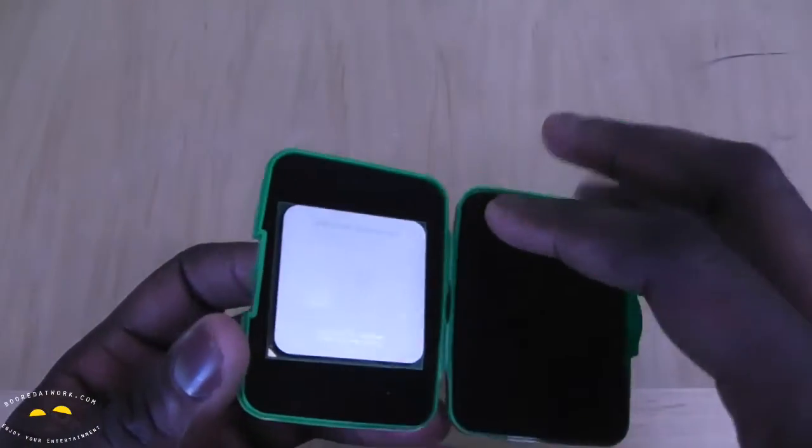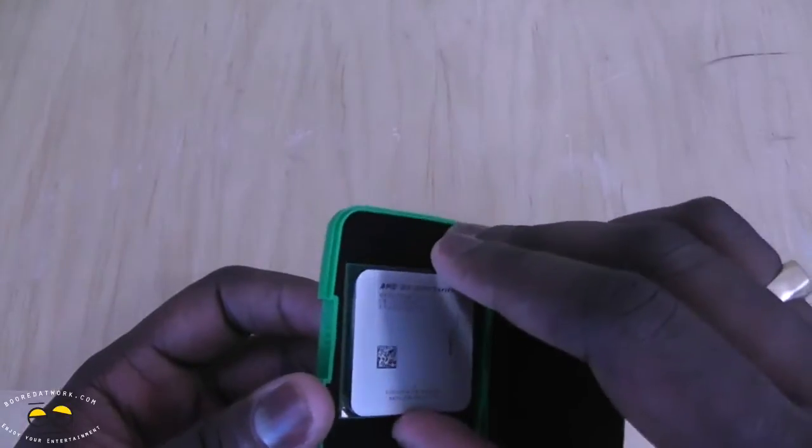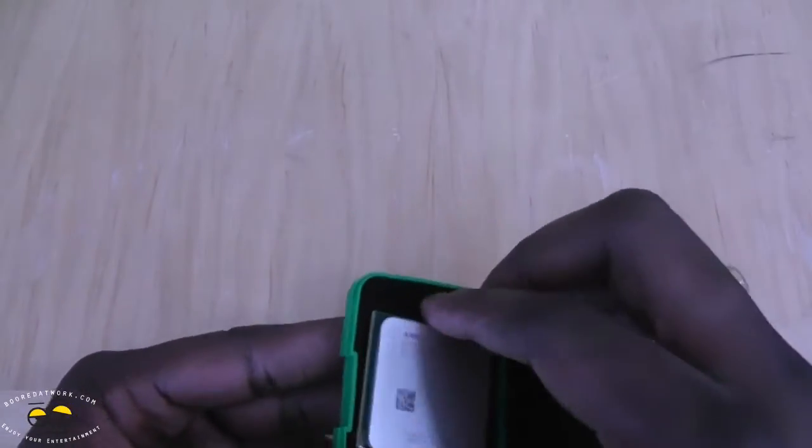Now what's an APU? Basically it's a combination of a CPU and GPU together combined in the system.